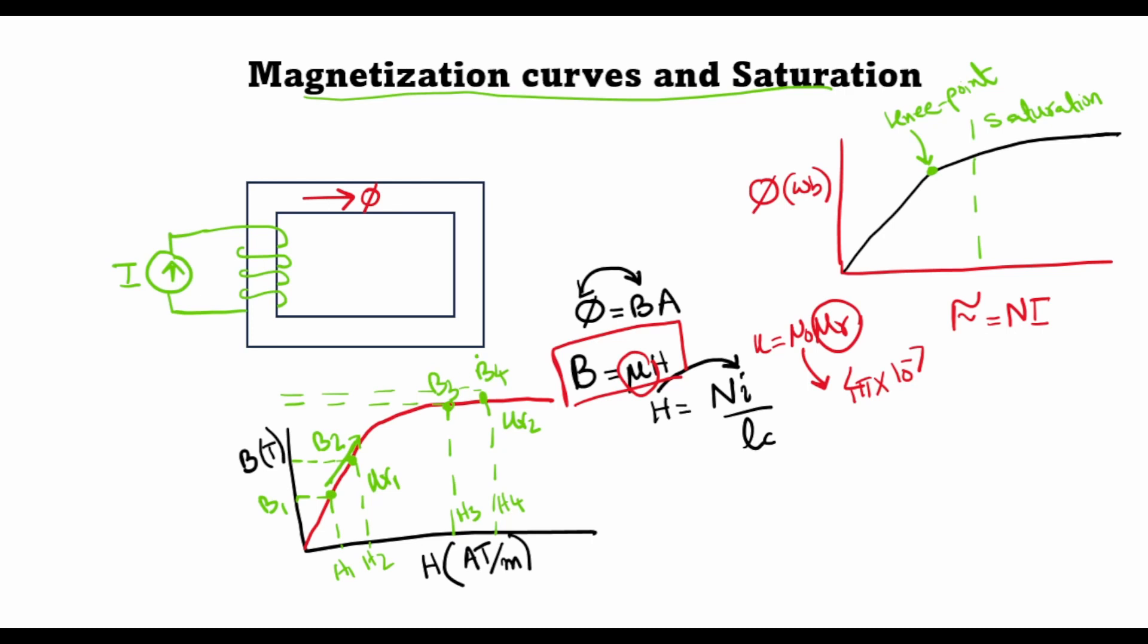Since electrical machines and transformers depend on the magnetic flux to develop voltages, we want the flux to be as high as possible. So it is usually operated very close to the knee point. However, we run the risk of going into saturation if we increase the magnetomotive force further and move into the saturation region.